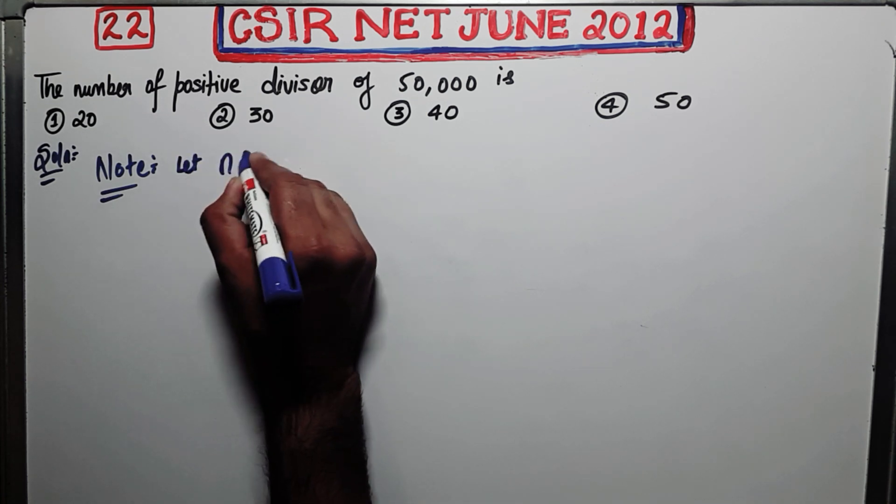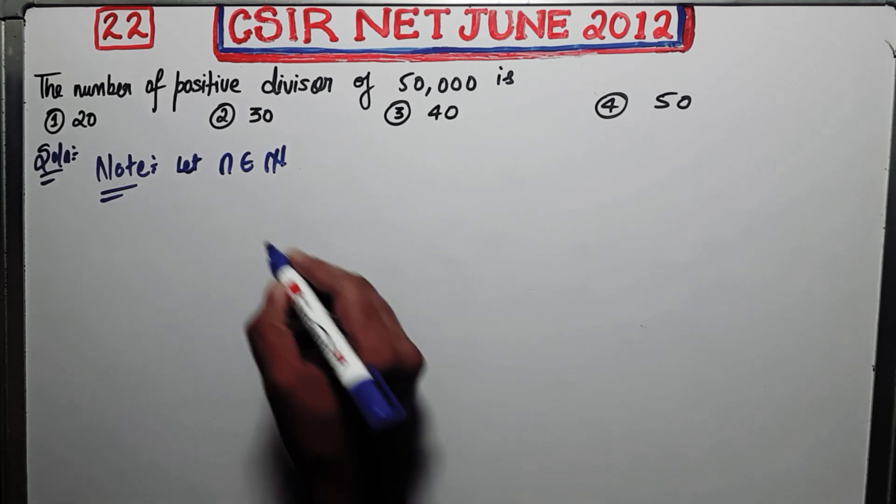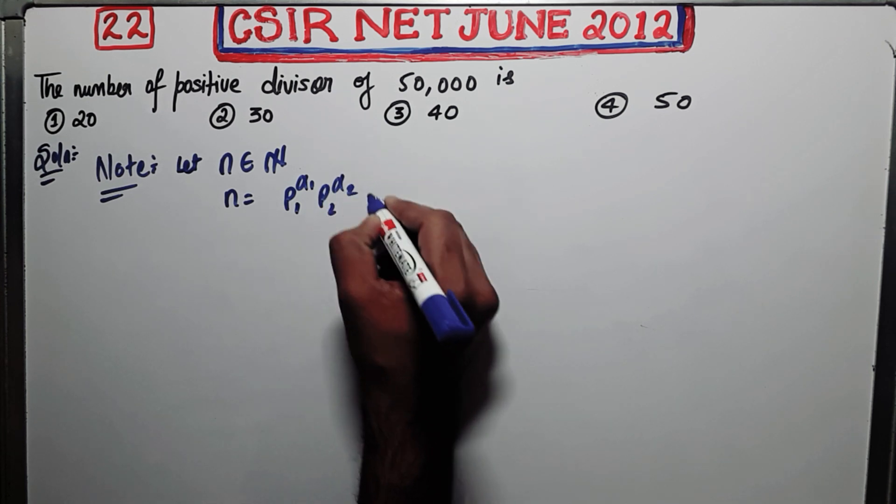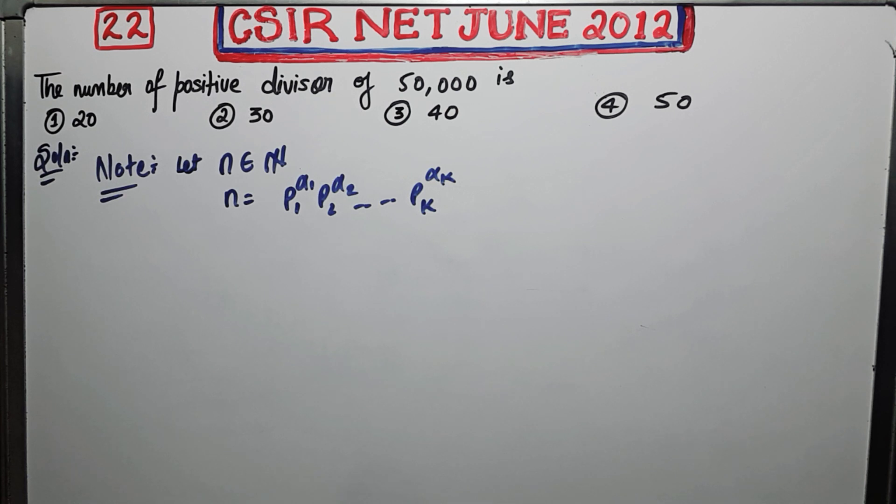Let n belong to natural numbers. Then you know by fundamental theorem of arithmetic that this number can be written as product of primes, right? So there exist P1, P2 up to PK prime such that you can express n in this form.